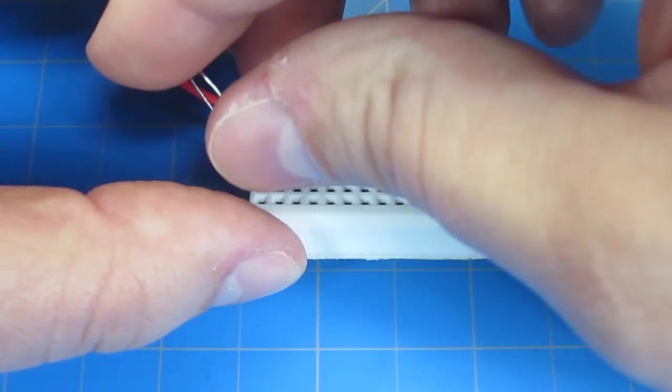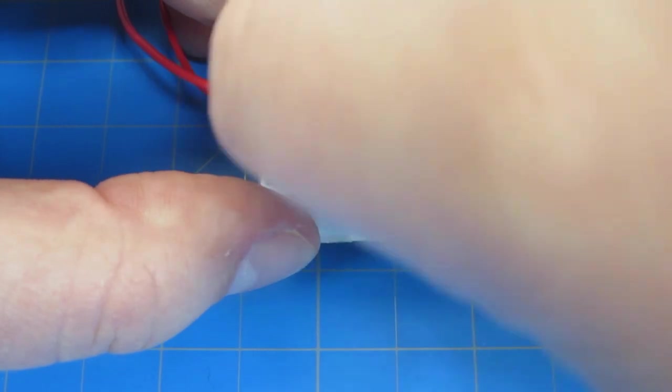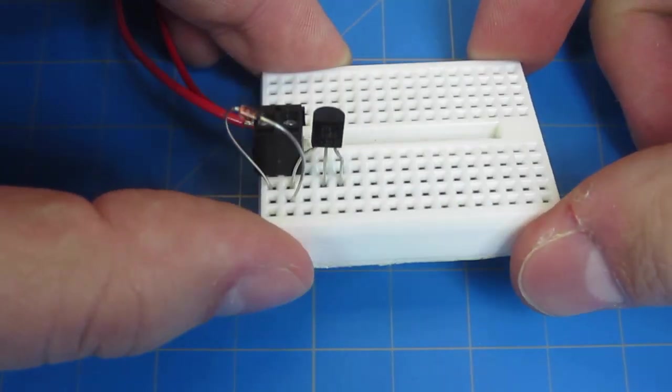Next, take your diode. Put it so that the positive side is in the first row and the negative side is in the second row.